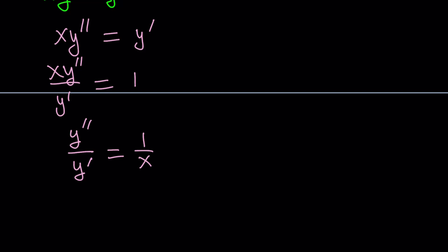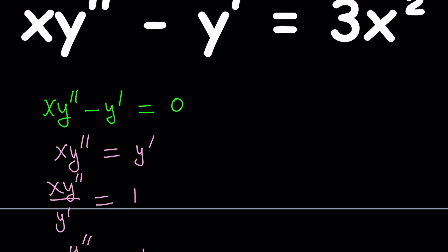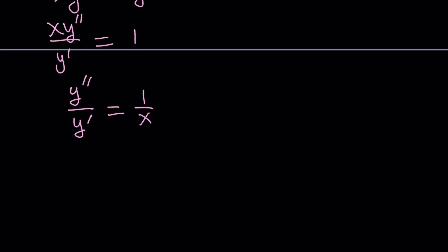In this case, x should not be 0, right? But what happens in the original equation if x is equal to 0, then you get y prime equals 0 and y just becomes a constant. You can go ahead and check that case at the end and see if that's going to be okay.